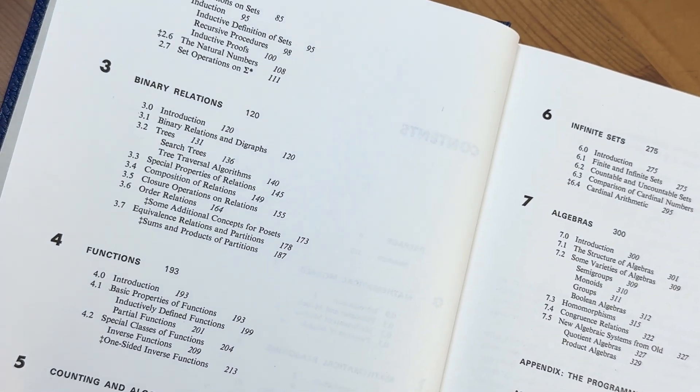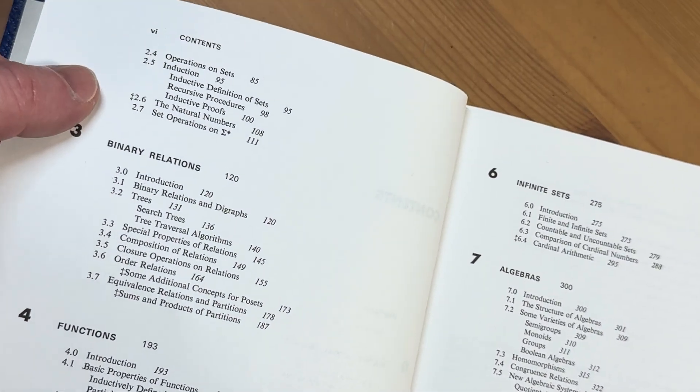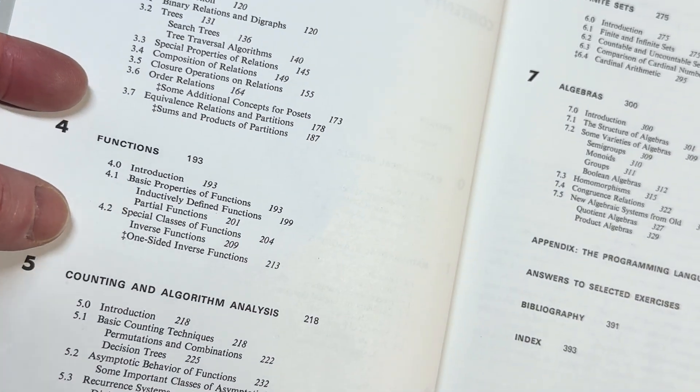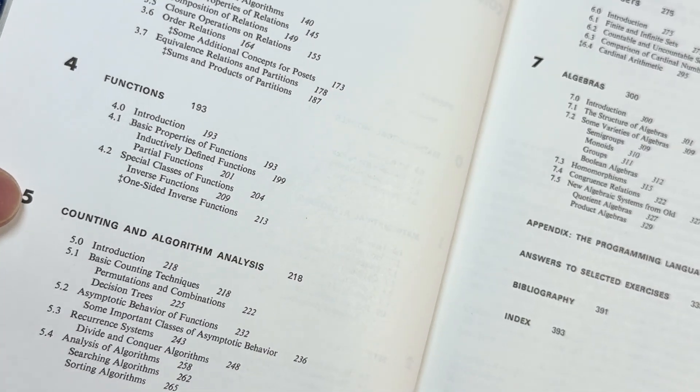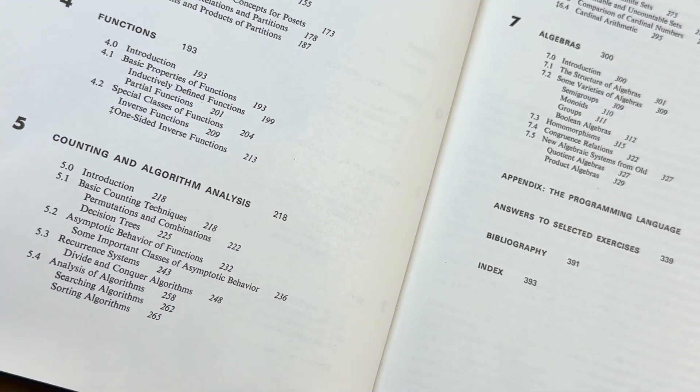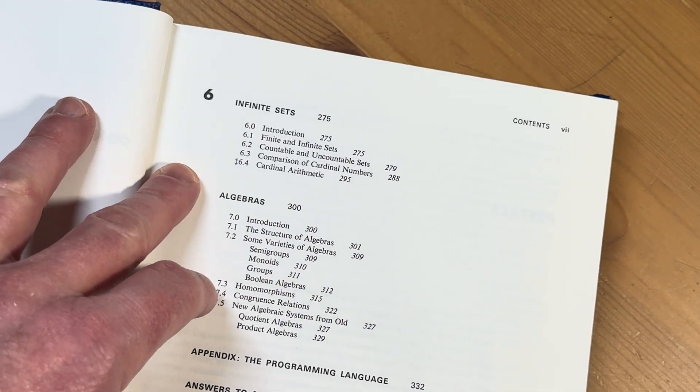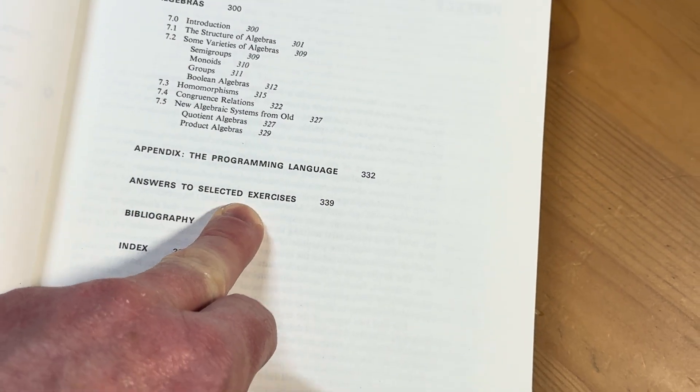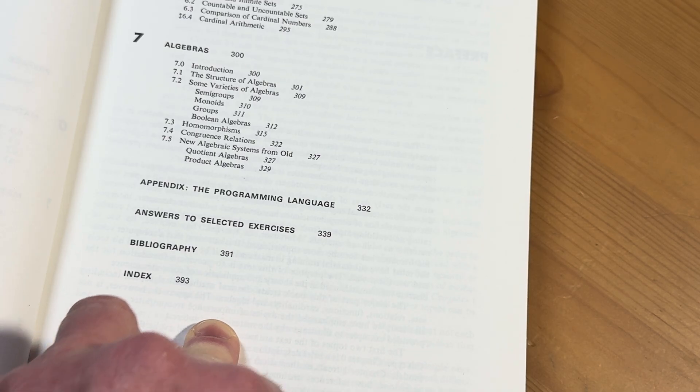It does contain answers to some of the questions in the back of the book. Binary relations. Functions. This is really important stuff. You do some proofs in this course, right? You learn to write proofs. Counting and algorithm analysis. Infinite sets and algebras. And then there's an appendix, the programming language. And then answers to selected exercises.